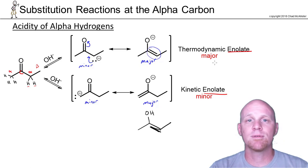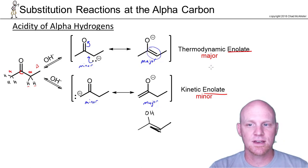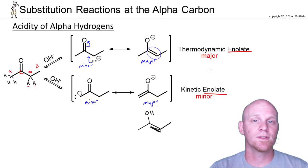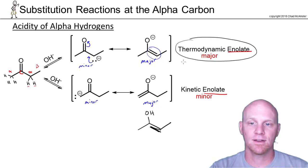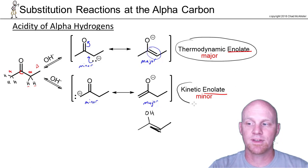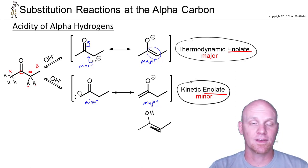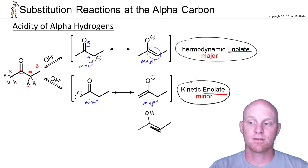When you deprotonate the alpha carbon, the conjugate base is called an enolate. If you have two different alpha carbons — one leading to a more substituted and one to a less substituted enolate — the more substituted one is the thermodynamic enolate, which is the major product with hydroxide. The less substituted one is the kinetic enolate, the minor product with hydroxide. We'll find out later that we can favor the kinetic enolate if we desire by using a bulky base.